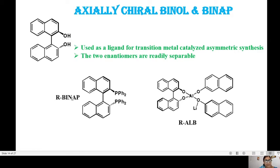This is an example of BINAP, which is an axially chiral phosphine ligand widely used in transition metal catalyzed asymmetric synthesis. You can have R-BINAP and S-BINAP, and depending on the transformation you need, you can choose between R-BINAP or S-BINAP.